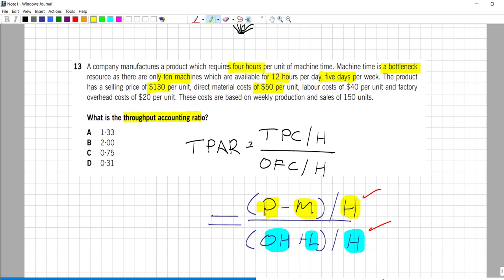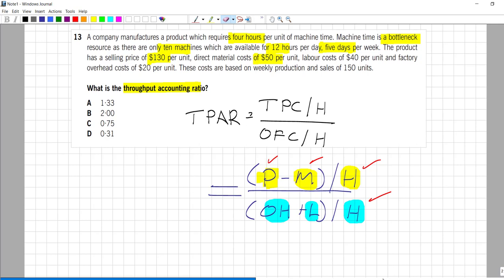Now here is the tricky part of this question. The other factory costs in this question are expressed at a unit level, not at a period cost as is usual. So what do we know so far? We know 130 minus 50 divided by 4 over 10 times 12 times 5.